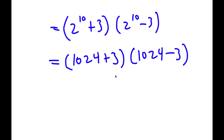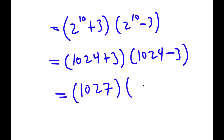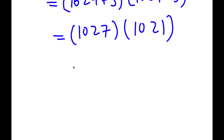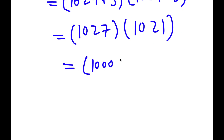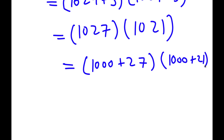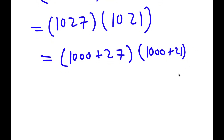And 1,024 plus 3 is 1,027. So I have 1,027 times 1,024 minus 3, which is 1,021. Now I can rewrite 1,027 as 1,000 plus 27, and 1,021 as 1,000 plus 21. So now I have 1,000 plus 27 times 1,000 plus 21.